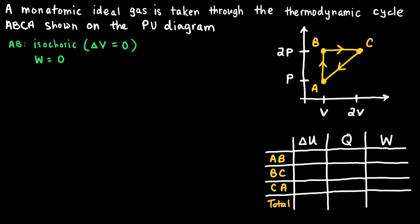If the first law of thermodynamics is given by delta U — the change in internal energy of the gas — equals Q plus W, where Q represents the heat that enters or leaves the system and W represents the work done by the system, then W here is zero because there's no work done on or by the gas. So the change in internal energy in process AB should equal the heat added to or removed from the system.